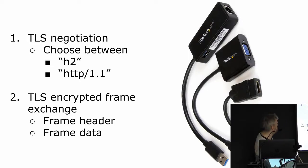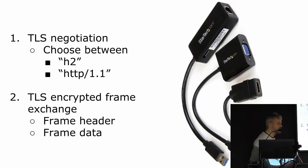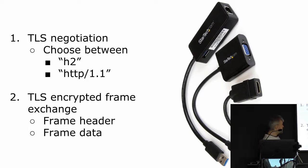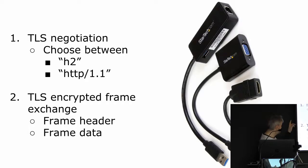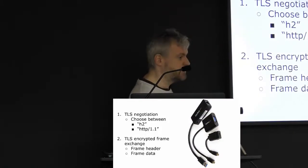They use the same negotiation mechanism to choose which HTTP protocol to use. The client says it supports both HTTP 1.1 and H2 (the identifier for HTTP/2), and the server responds saying it also understands HTTP/2 and prefers it. After that exchange, because they both chose HTTP/2, they start talking the proper HTTP/2 protocol, which is based on a set of frames — exchanging encrypted frames using the agreed-upon encryption standard.